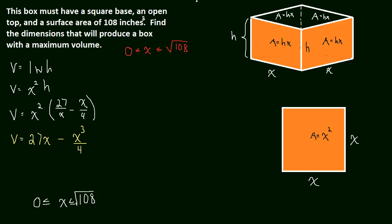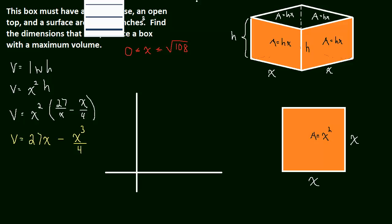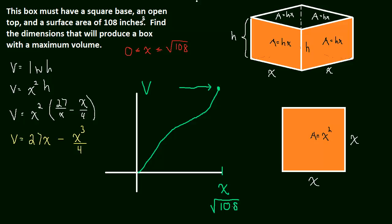What I want to explain about the domain is, what if it were the case, hypothetically, that we had the volume function look something like this? Here's volume and here is x. What if the function looked like that for some reason? And the most that the volume is going to be is when x is at the biggest it can be. This would be, in our case, the square root of 108. We need to know what that point is so we know where the maximum volume is. We need to know what the biggest x could be because we have to test this point and make sure that it's not a maximum.